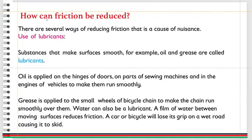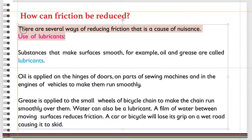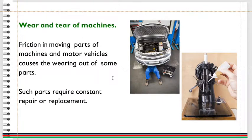How can friction be reduced? There are several ways of reducing friction that is a cause of nuisance. Use of lubricants — substances that make surfaces smooth. For example, oil and grease are called lubricants.